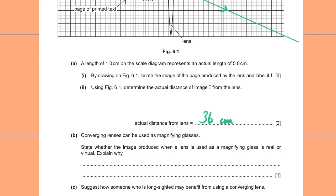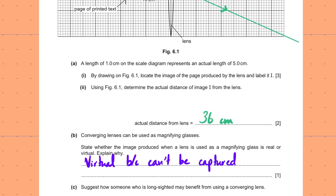Converging lenses can be used as magnifying glasses. State whether the image is real or virtual and explain why. The image produced when a lens is used as a magnifying glass is virtual — this is Case 6 of lenses. It is virtual because it cannot be captured on a screen, or because the rays only appear to come from that point — they don't actually diverge from there.